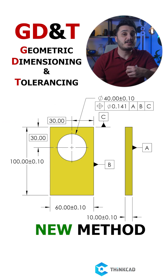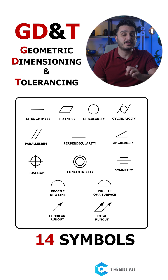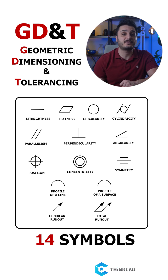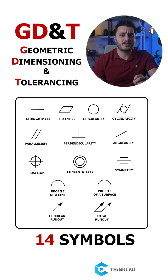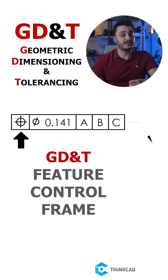GD&T introduces many rules and concepts including 14 symbols that are each responsible for controlling a specific geometric characteristic such as position, flatness, and perpendicularity. These symbols are applied using a GD&T feature control frame and placed on the drawing to control various parameters on your features.